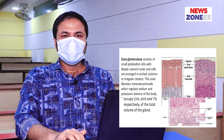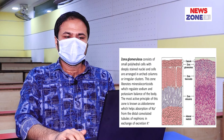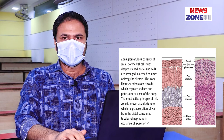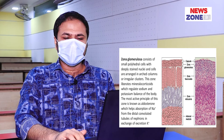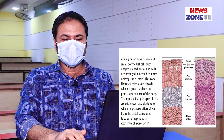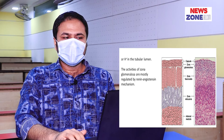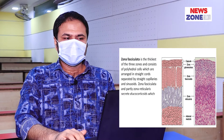Zona glomerulosa. This zone consists of small polyhedral cells arranged in arcuate columns. This zone secretes mineralocorticoids, which regulate sodium and potassium balance of the body. The most active principle is known as aldosterone, which helps absorption of sodium ions from the distal convoluted tubules of nephrons in exchange for excretion of potassium or hydrogen ions into the tubular lumen. The activity of this zone is mostly regulated by the renin-angiotensin mechanism.